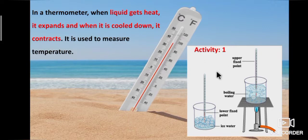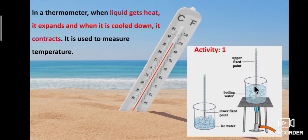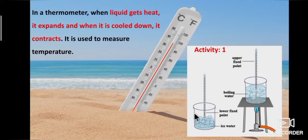Let's see the activity. Take water in a beaker and heat it with a candle or burner. Using a scale, note down the position of the surface of water and measure the temperature with a thermometer. After some time, let the water cool down, note the position of the water surface, and measure the temperature again. What is the change in the surface of water on heating and cooling?